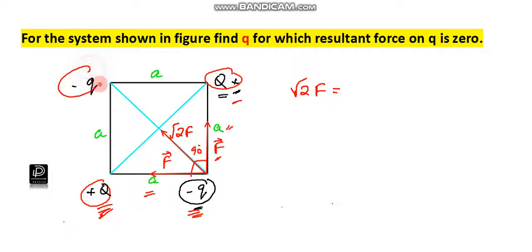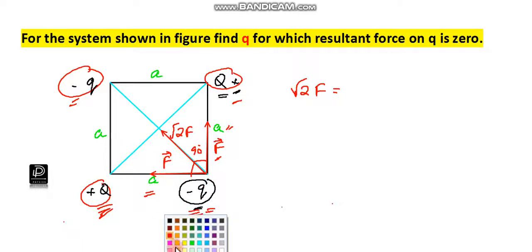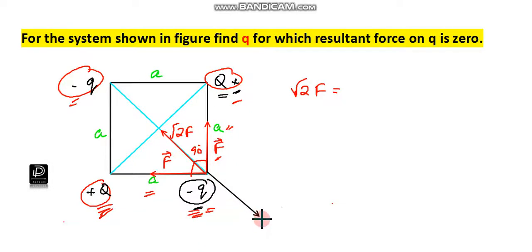Now, one more charge is there — another minus q at the opposite corner. This minus q will repel this minus q because they have the same sign. Therefore, the repulsive force F_R will act along this direction — along the diagonal, pointing outward.